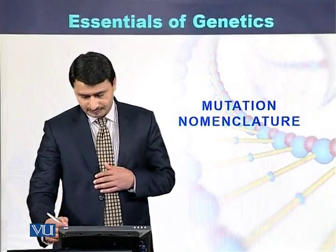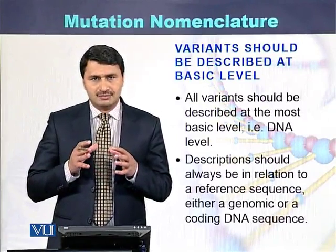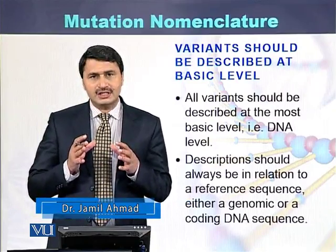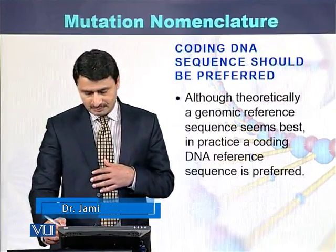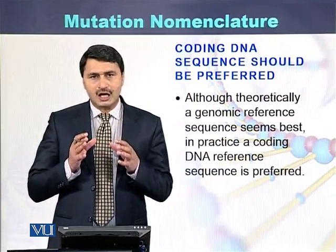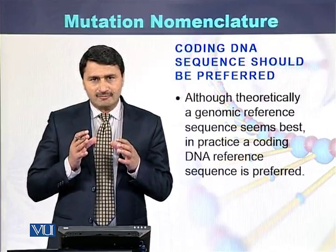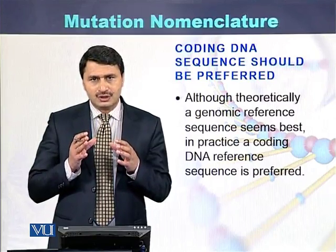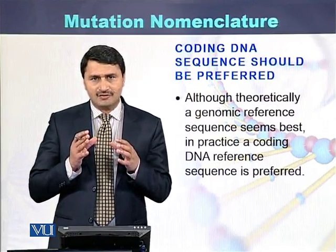Mutation nomenclature. All variants should be described at the most basic level, that is the DNA level. Description should always be in relation to the reference sequences. Coding DNA sequence should be used — although theoretically the full DNA sequence suits best, practically the coding sequence of the DNA is usually used to represent variation at the DNA or protein level.